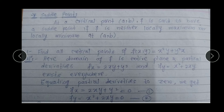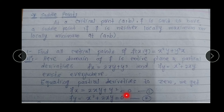At the critical point, Fx and Fy are equal to 0. So first we find Fx: 2xy + y² = 0. Similarly we find Fy: x² + 2xy = 0. We need to solve both these equations simultaneously.